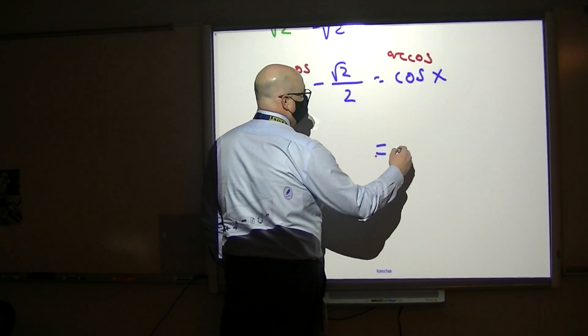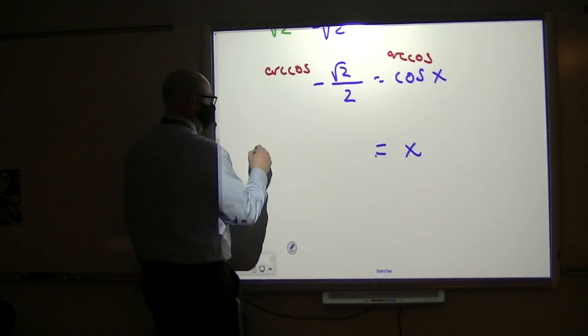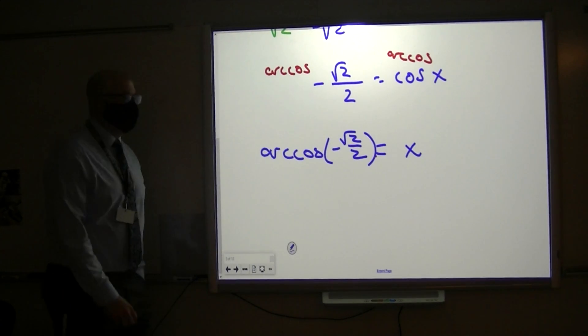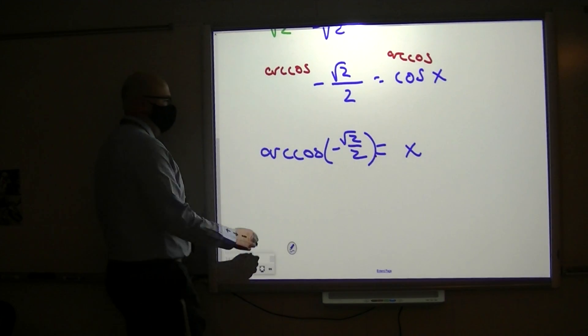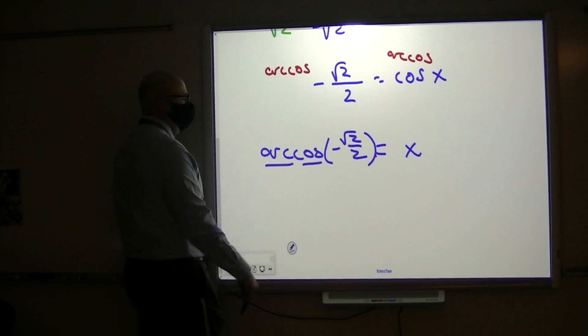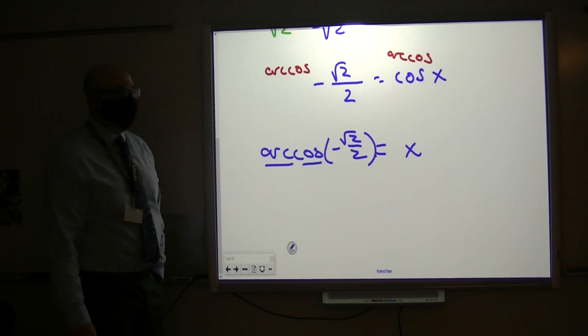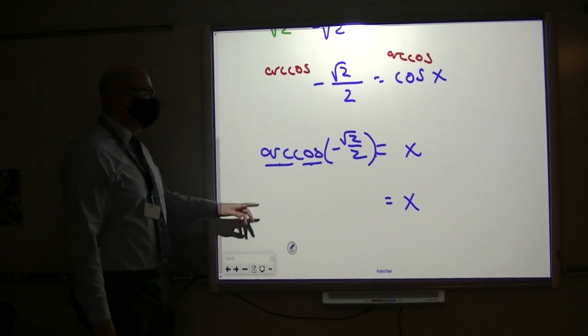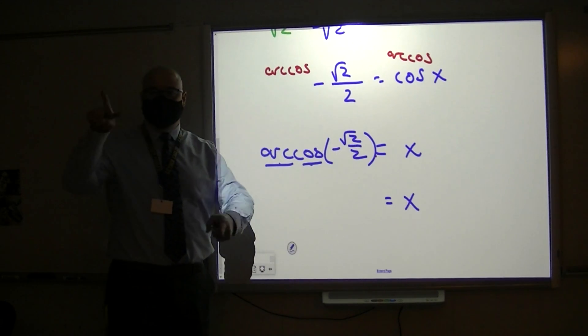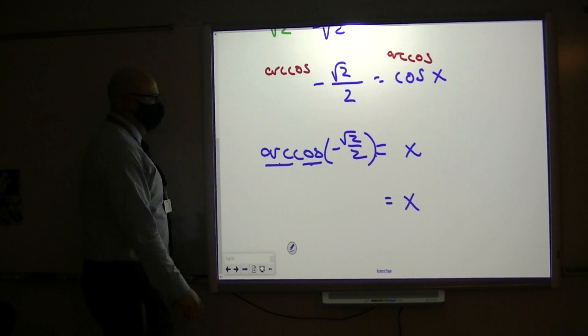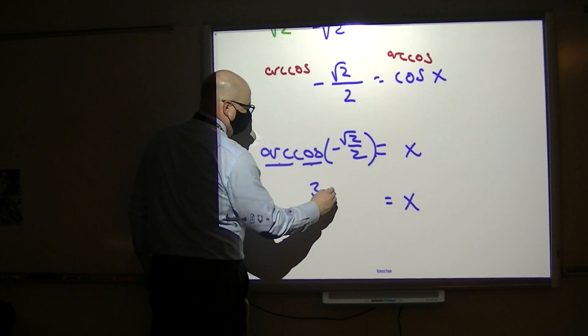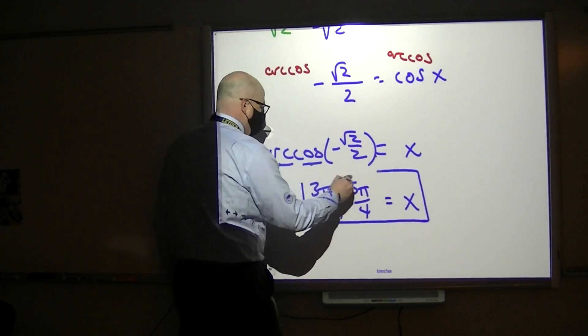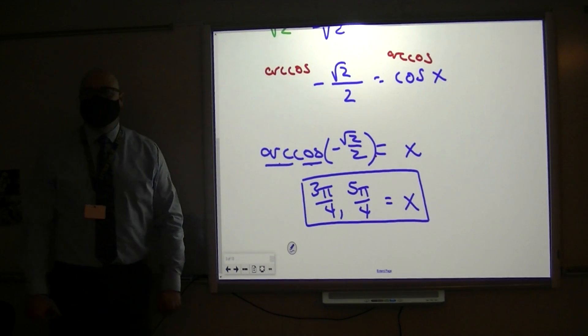So we have x equals the arc cosine of negative radical 2 over 2. What pi values have x coordinates? Because we're cosines now. What pi values have x coordinates of radical 2 over 2, excuse me, negative. Where are the x coordinates negative? In quadrants 3 and 4. And radical 2 over 2, that's our pi over 4 angles. And the 2 pi over 4 angles that are in quadrants 3 and 4 are 3 pi over 4 and 5 pi over 4.